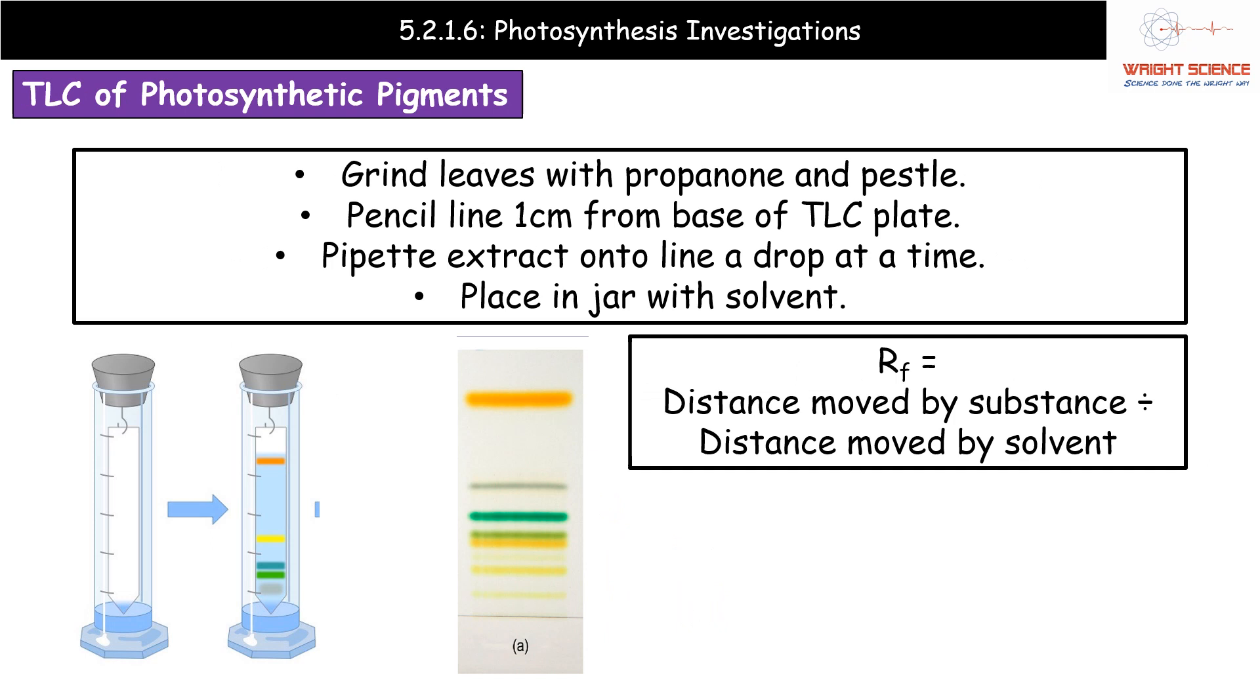The other experiment I'm going to briefly mention is the TLC of the photosynthetic pigments. This should be something you're familiar with from your work on your PAGs, as it's one of three potential options for this PAG that OCR gives you. But we'll have a quick recap on the basics. What we start off with - leaves of some description, and we're going to grind those leaves up with some propanone and a pestle and mortar. Basically in your pestle and mortar, you've chucked some propanone, thrown some leaves in, ground them all up into a lovely pulpy mess.